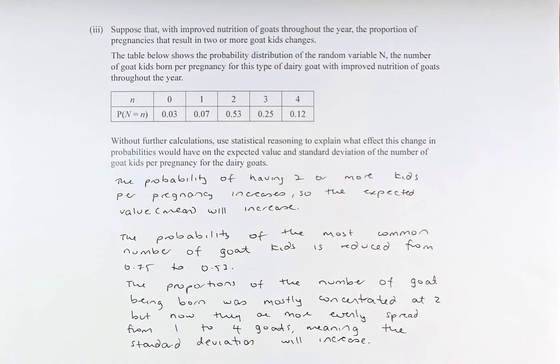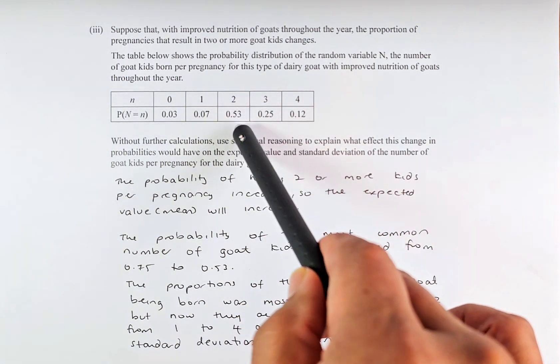To calculate, to find the difference in standard deviation, so the probability of the most common number of goat kids is reduced from 0.75 to 0.53. So the most common number is 2 goats born.